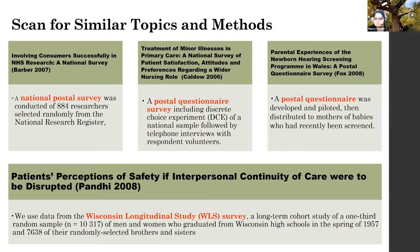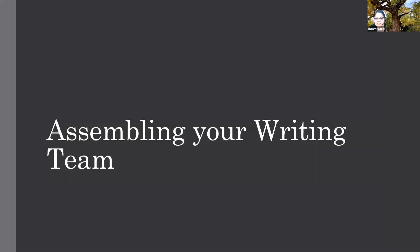The second part of the process is scanning for similar topics and methods. For example, if I'm doing a mail survey, I look at three target journals and confirm there are recent examples of postal questionnaires published there. If you can find examples of similar methods, reviewers will probably be comfortable with your approach. I also pull those articles to get a sense of what level of detail different journals want in the methods section.